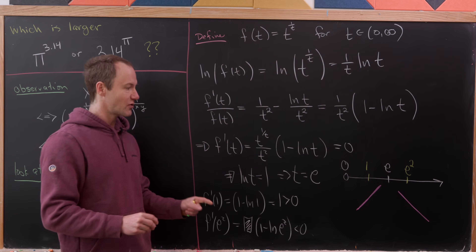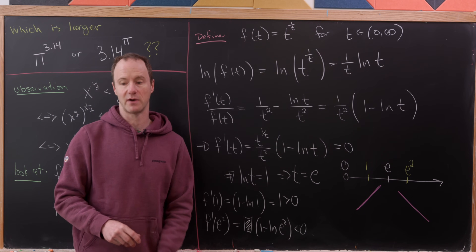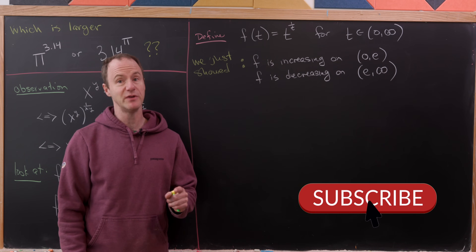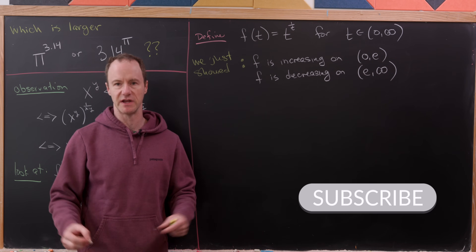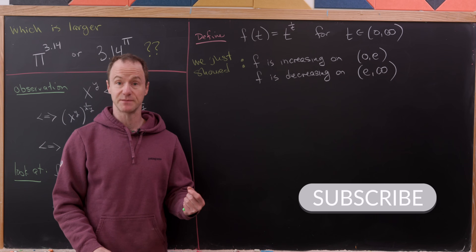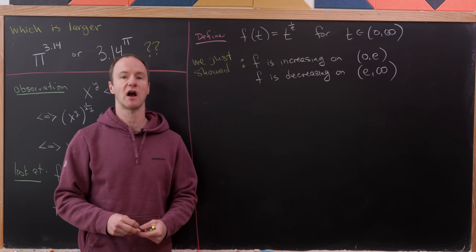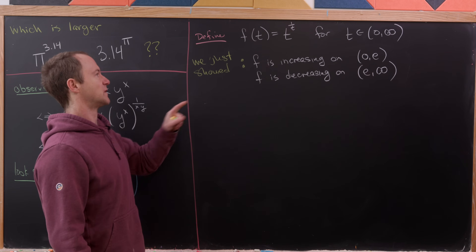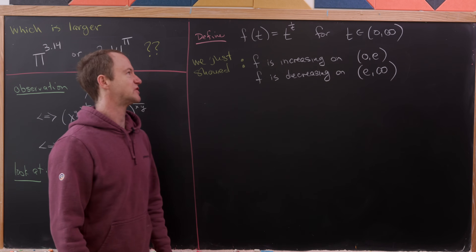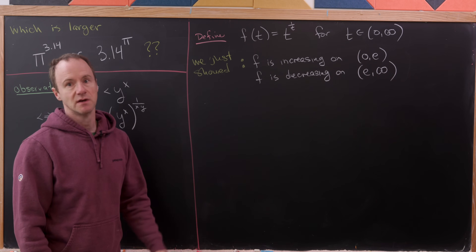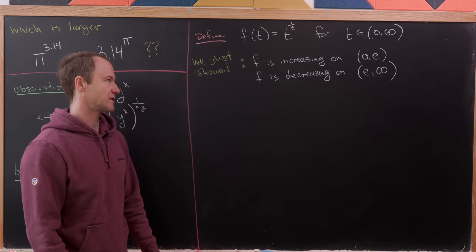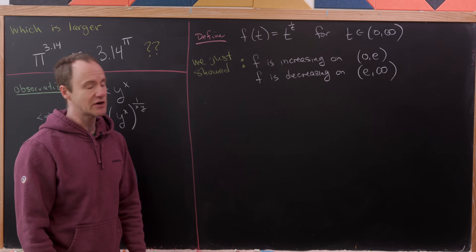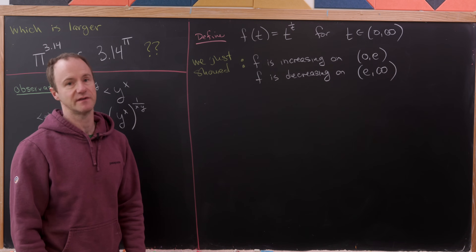To summarize: the function f(t) = t^(1/t), defined for positive real numbers, is increasing on (0, e) and decreasing on (e, ∞). Now we can finish the problem.